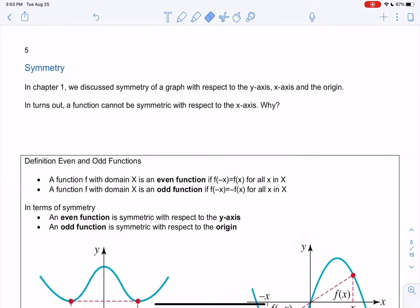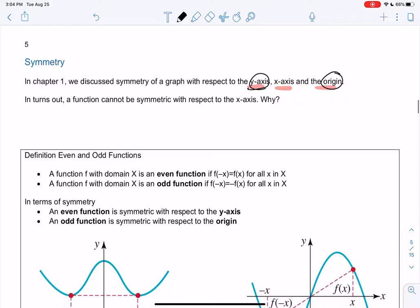So in chapter 1, we talked about the three types of symmetry, about the y-axis, x-axis, and the origin. And now we're going to relate those to functions. So functions can be symmetric about the y-axis and the origin, but it turns out they cannot be symmetric about the x-axis. So let's figure out why.